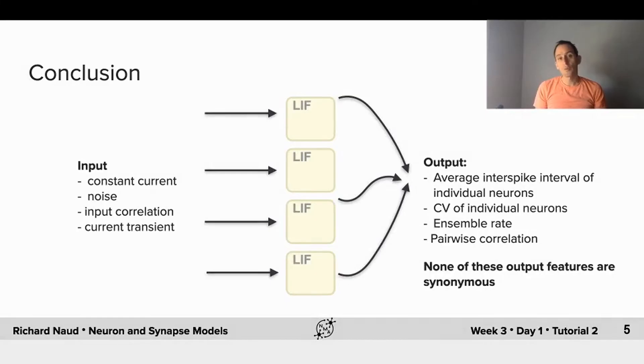We can already conclude what I've been saying so far. There are different features of the inputs: we could consider the mean of the input, the constant part, the noise around it, the correlation of the noise between one unit and another, the transient input changes, and these input features are translated into the output of neurons.